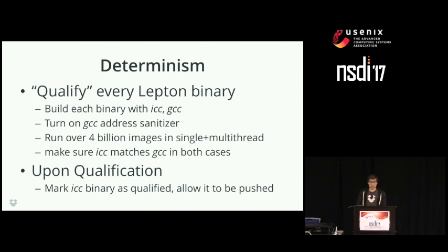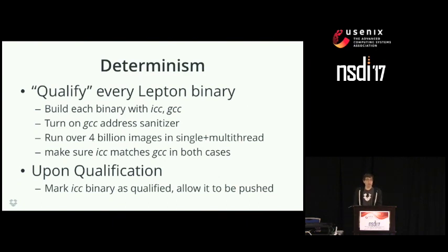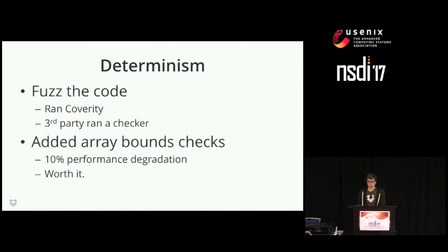To guard against this, we have a very strict process to qualify every Lepton binary and make sure it acts completely deterministically. We build the Lepton candidate with both the Intel compiler and GCC with address sanitizer flags. We run both versions over 4 billion images in both multi-threaded and single-threaded mode, making sure the Intel-compiled version matches GCC's version in all four cases. We also fuzz the code using Coverity and third-party tools. Since one fuzzer did find something, we decided to add array bounds checks to every array lookup based on user data, resulting in a 10% performance hit.